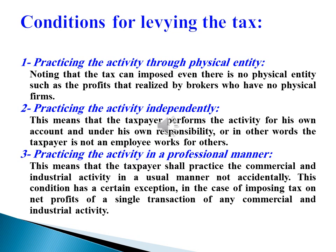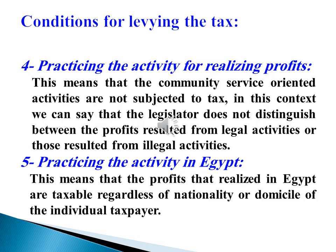Condition 3 — Practicing the activity in a professional manner. This means that the taxpayer shall practice the commercial and industrial activity in a usual manner, not accidentally. This condition has a certain exception in the case of imposing tax on net profits of a single transaction of any commercial and industrial activity. Condition 4 — Practicing the activity for realizing profits. This means that community-service-oriented activities are not subject to tax. In this context, the legislator does not distinguish between profits resulting from legal activities and those resulting from illegal activities.